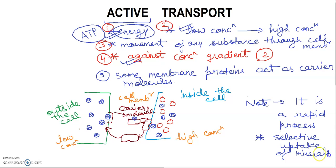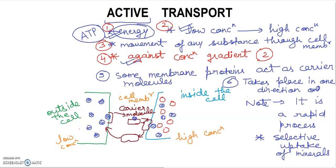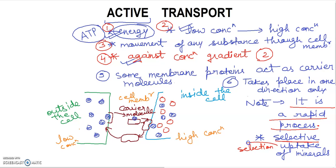Comparing active transport with passive transport: passive transport requires no energy and moves from high to low concentration. Active transport takes place in one direction only, while passive transport can take place in both directions. Active transport is a rapid process and involves selective uptake — meaning only certain molecules are allowed through — whereas passive transport allows all molecules.